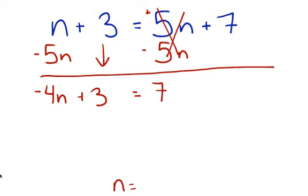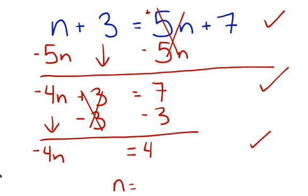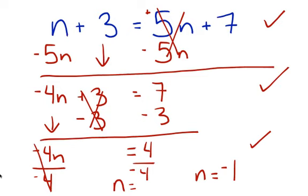Now we've got our two-step equation. We're going to do the inverse of positive 3, which is negative 3, on both sides. Negative 4n carries down. Positive 3 and negative 3 cancel to 0, and 7 minus 3 is 4. So variables on both sides reduced to a two-step, and now a one-step equation. We divide by negative 4 on both sides — the negative 4s cancel to give 1, and 4 divided by negative 4 is negative 1. Go back and plug in negative 1 to verify.